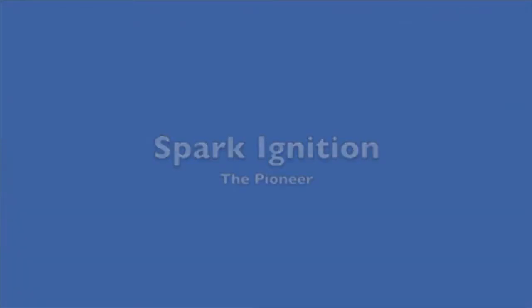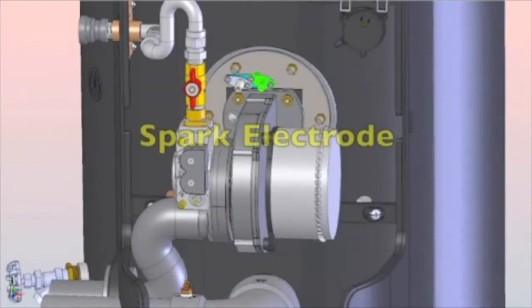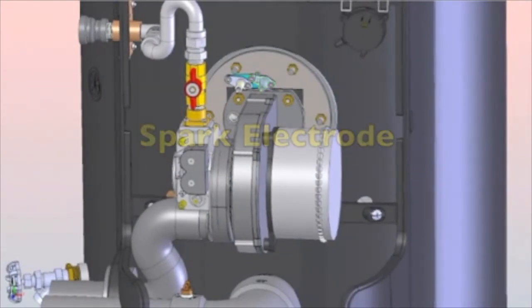Spark ignition: the burner flame ignites by applying high voltage to the system spark electrode, which causes a spark from electrode to ground.